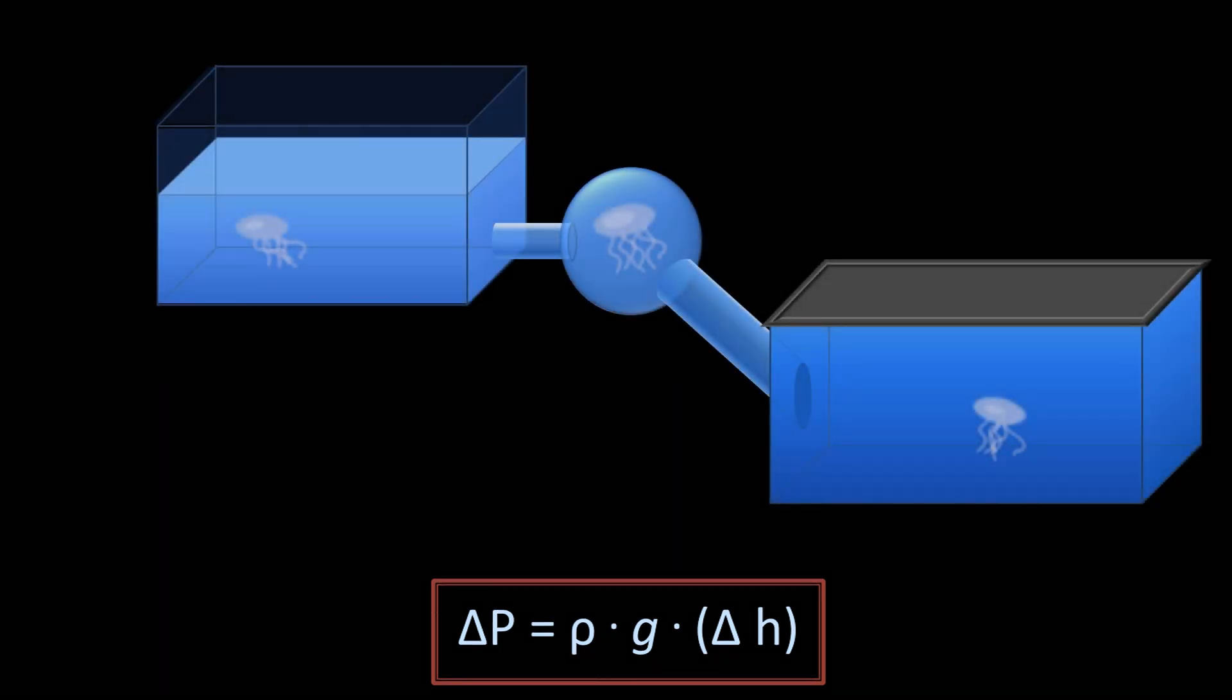If I wanted to know what the maximum water pressure was at the bottom of the system of tanks, the only thing that would matter is the total vertical distance between the top and bottom. The shape of the tanks, the volume of the tanks, the width and length of the connecting tubes, are all irrelevant.